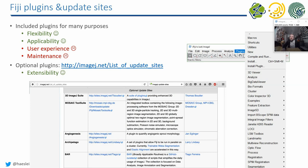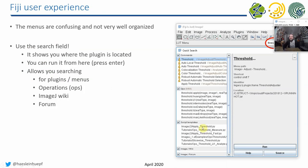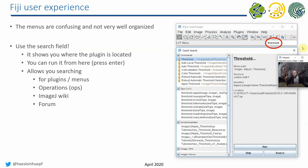Furthermore, Fiji and ImageJ are extensible. There's a website listing additional update sites which bring even more menu entries to your Fiji, making it even more complicated to find what you want. That's why a search field was integrated into the Fiji main window — you can type what you're looking for, such as 'background subtraction' or 'threshold', and find the operation quickly. People who use ImageJ a lot mostly use this search field rather than menus.